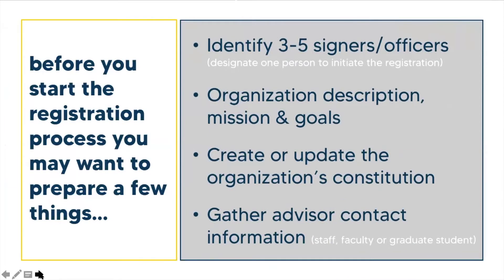Before beginning the registration process, you may want to prepare a few things. First, identify the three to five signers or officers responsible for the organization — the president and treasurer must be listed. Designate one signer to initiate the registration process. The leaders should develop the organization's description, mission, and goals, then develop a constitution that outlines club operations, officer positions and duties, the process for handling funds, the process for removing officers or general members, and more. A sample constitution can be found on the campus org's website under the resources tab. If your organization has an advisor, gather their contact information as it will be needed during registration.